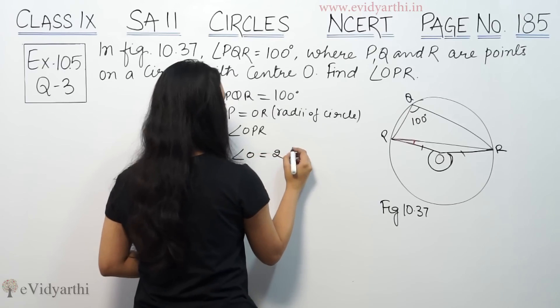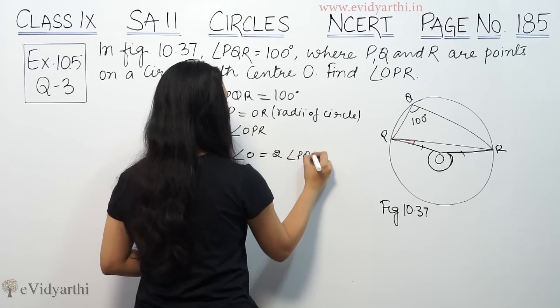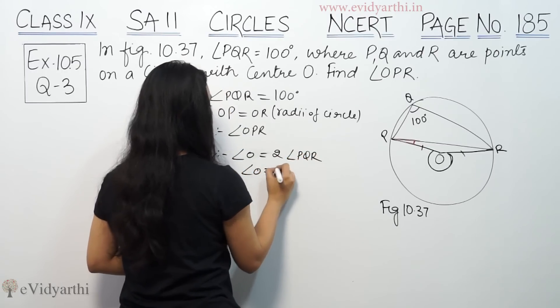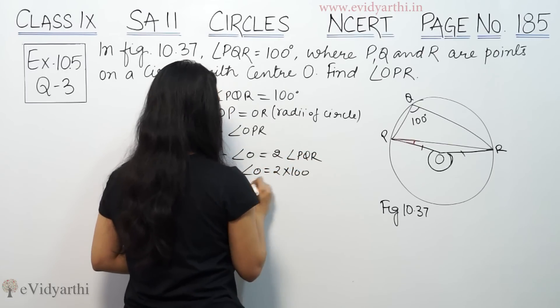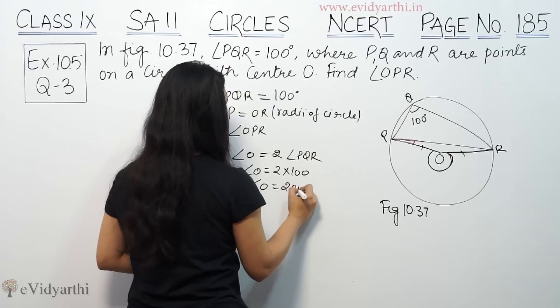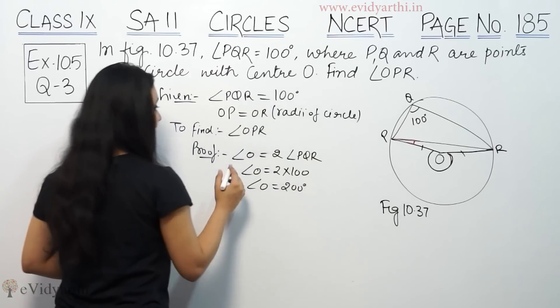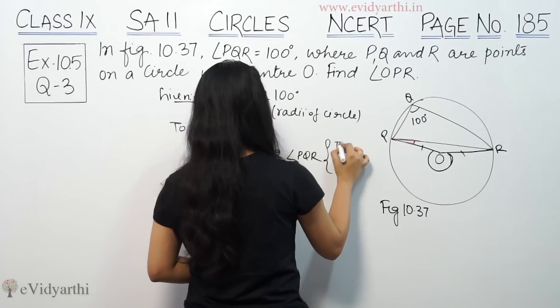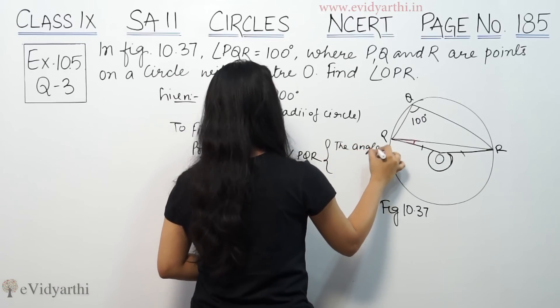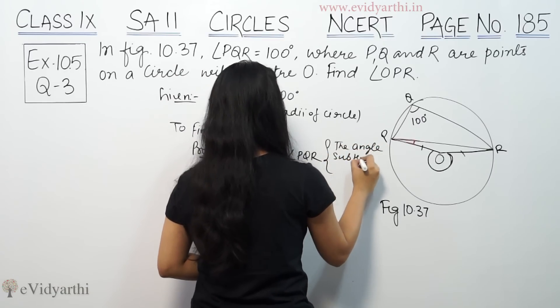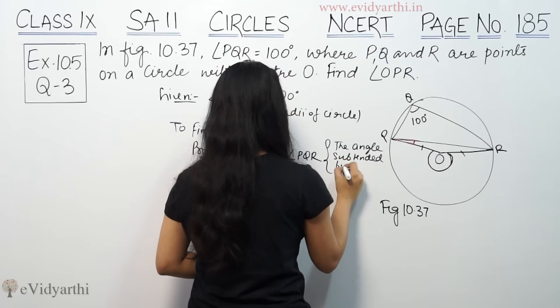equals twice of angle PQR. Angle O, 2 into 100, means this is 200 degrees. The reason I'm applying it, the angle subtended by an arc at the center...